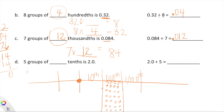Let's look at one more: 5 groups of blank tenths is 2, or 20 tenths. So 20 tenths divided by 5 — if we had 20 tenths and put them into 5 equal groups, how many tenths would we have in each group? You would have 4 tenths. 20 tenths divided by 5 is equal to 4 tenths. The standard form of 4 tenths is 0.4.